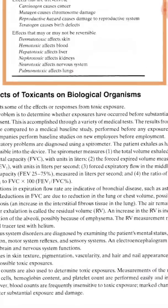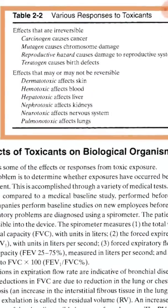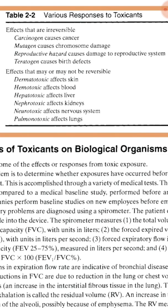We can see how chemicals affect the body. Effects are broadly classified according to their nature. Effects may be irreversible or reversible. Irreversible diseases cannot be cured easily by medication — once they happen, they may remain for a lifetime. Irreversible effects include carcinogens, which can cause cancer; mutagens, which cause chromosome damage; and reproductive hazards, which cause damage to the reproductive system.